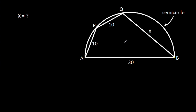In this video, we have been given a semicircle in which AP is 10, PQ is 10, AB is 30, and BQ is X. We have to find X.